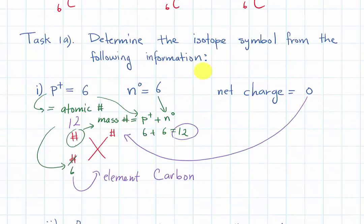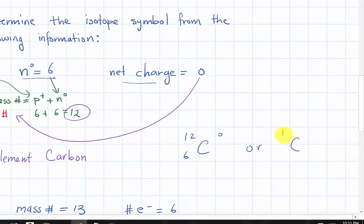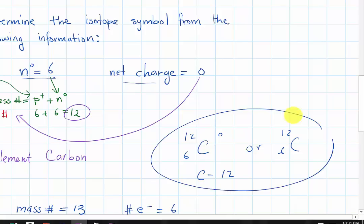Let's apply what we've learned about isotopes. In this task, we determine the isotope symbol given: protons = 6, neutrons = 6, and net charge = 0. The protons give the atomic number, which is 6. Taking protons plus neutrons gives a mass number of 12. The net charge is 0. So the answer is carbon-12, written as C with mass number 12, atomic number 6, and charge 0.